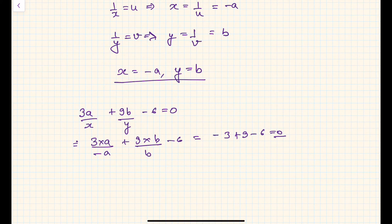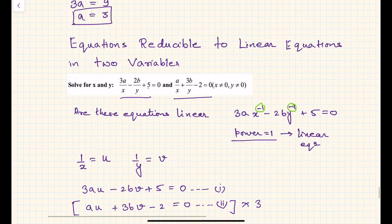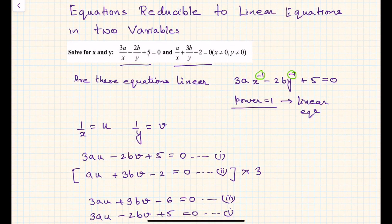Hence our solution x equals minus a and y equals b looks correct. This is how you solve or reduce a system of equations which doesn't appear to be linear but you can convert them into linear equations and then solve using any of the standard methods.